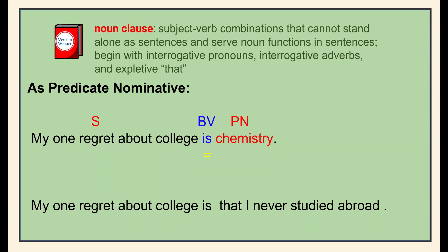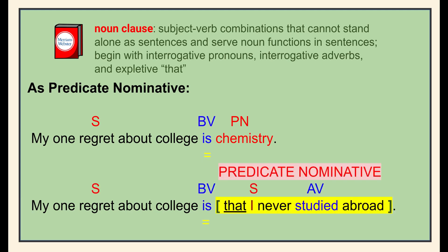In the first sentence, 'is' is the be-verb; its subject is 'regret.' I know to look for a predicate nominative after a be-verb that renames the subject, and here the predicate nominative is 'chemistry.' In the second sentence, I have located the additional verb 'studied' and its subject 'I,' and I also found the expletive 'that.' When I look at the be-verb 'is' and look for a predicate nominative that renames my subject — regret equals what — I can see that the noun clause is acting as a predicate nominative.